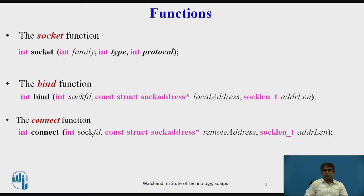The bind function. The socket function fills the fields in the socket partially. To bind the socket to the local computer and local port, the bind function needs to be called. The bind function fills the value of the local socket address and returns minus one if the binding fails. The prototype is shown here. In this prototype, the socfd is the value of the socket descriptor returned from the socket function call. Local address is a pointer to a socket address, and the address length is the length of the socket address.